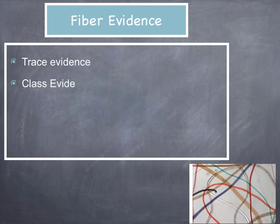Fiber evidence has class evidence characteristics, so we can associate that fiber with a group. We may be able to narrow it down to the type of carpet that was produced, or what kind of material was in the specific coat that the fiber was traced to. There has only been one case where fiber evidence could actually be narrowed down to a specific source, and that happened in the Wayne Williams case, which we'll talk about a little bit later.